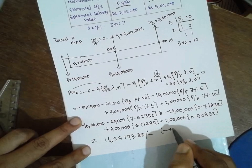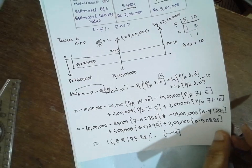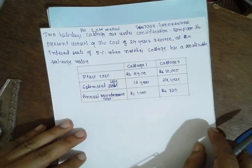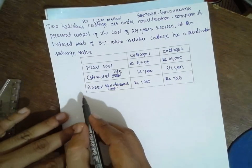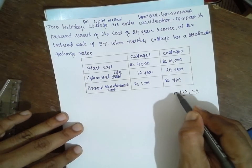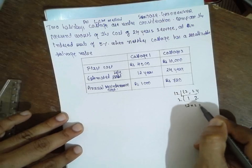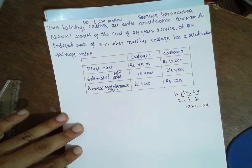This is problem number one. Now going for problem two. In the LCM method again, there are two cottages but there is no salvage value. Go for the LCM method: 12 and 24. The LCM for this one is 24.